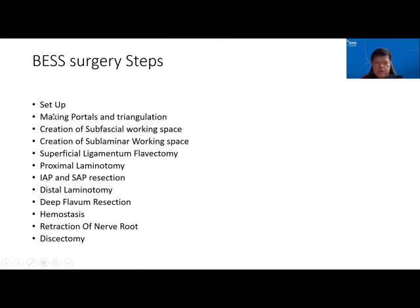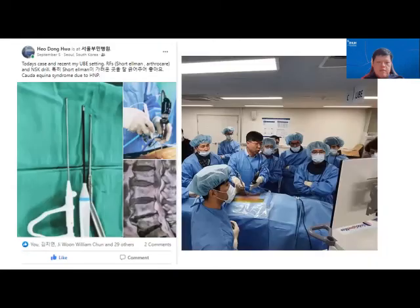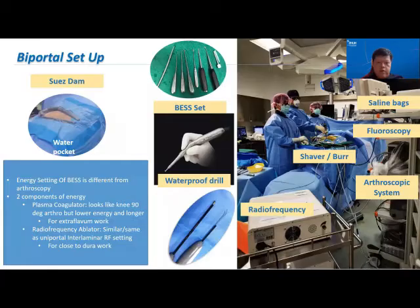The setup involves creating a sub-fascial working space, then sub-laminar working space, superficial flavectomy, laminotomy, resection, and dual distal laminotomy, followed by distal flavum resection. We also aim for discectomy when indicated — these steps are very similar to microscopic surgery. My setup has the left non-dominant hand holding the scope and the dominant right hand holding the RF drill or ARTRO and working instruments. We have the BESS set available in Singapore, using a water-pump SK drill, JALP system, and a spinal dam for water outflow.